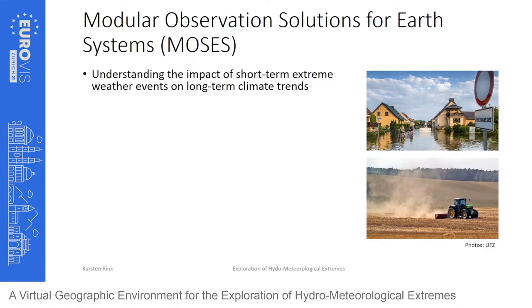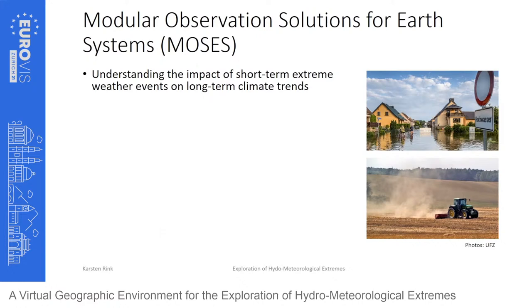This study is based on data gathered within the Initiative on Modular Observation Solutions for Earth Systems — MOSES — which is about understanding the impact of short-term weather events on long-term climate trends. Researchers in Germany monitor the evolution of weather extremes such as heavy rain events, flooding, or droughts, and their impact — for instance the flooding of downstream catchment areas from runoff, or delayed effects like algal blooms in coastal zones triggered by nutrient pulses from inland sources.